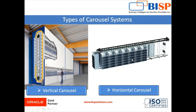The horizontal carousel system is the original carousel system — a series of bins supported on a track via a series of yokes. These bins contain multiple shelves on which goods are stored. This is all about material handling equipment in Oracle WMS Cloud. Thanks for watching this video. Thank you so much.